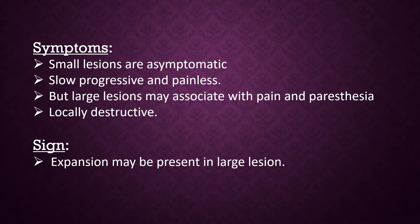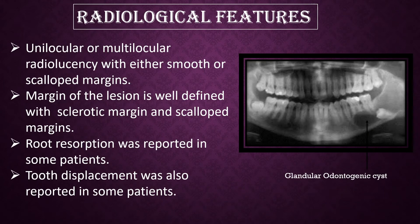Signs: Expansion may be present in large lesions. Radiologically, unilocular or multilocular radiolucency with either smooth or scalloped margins. The margin of the lesion is well defined with a sclerotic and scalloped margin. Root resorption was reported in some patients, and tooth displacement was also reported in some patients.